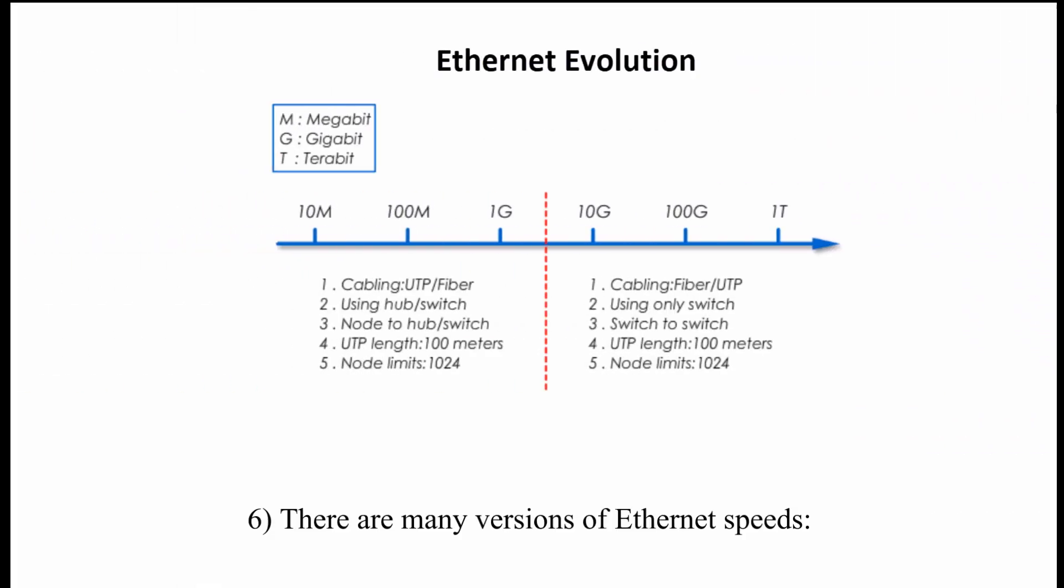6. There are many versions of Ethernet speeds: 10 Mbps, 100 Mbps, 1 Gbps, 10 Gbps, 100 Gbps, and even more.